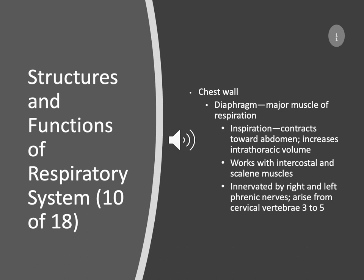In your intestines you have these little fibers called microvilli and villi — like little fingers that push the poop along the way. Within your chest wall you have your diaphragm, which sits below — it's the major muscle group of respiration. Look at that as those little fingers moving things along, but we're pushing upward. The diaphragm is incredibly important when it comes to making sure that you can get a proper inspiratory volume. It contracts towards the abdomen and then increases the intrathoracic volume. It works with the intercostal and scalene muscles, and they innervate the right and left phrenic nerves arising from cervical vertebrae C3 to C5.